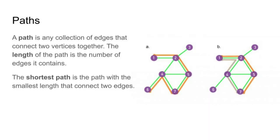Next we have paths. A path has a very simple definition: it is the collection of edges that connects two vertices together, and that can happen in any manner. You can also have a trail, which connects two nodes together but without repeating any edge or vertex. We can also define the length of a path as the number of edges it contains. Having that, we can define the shortest path between two nodes as the path — among all possible paths — that has the smallest length.